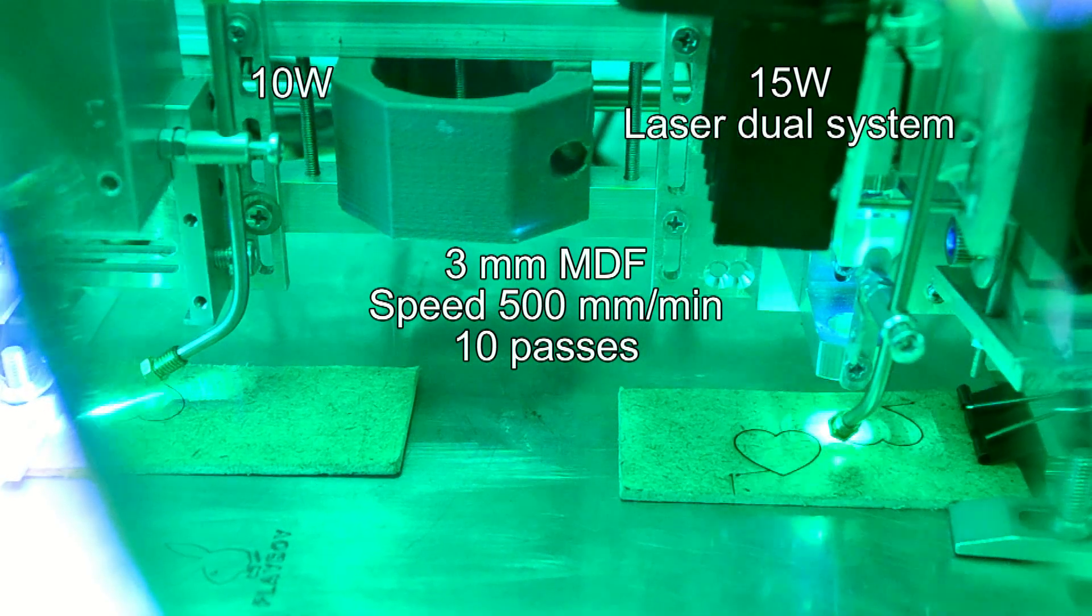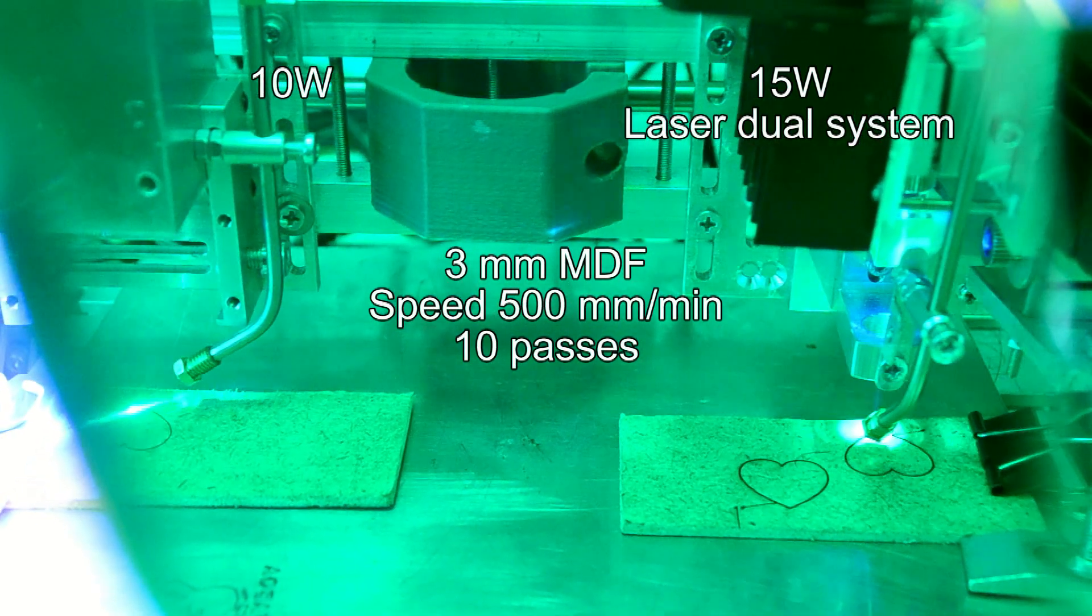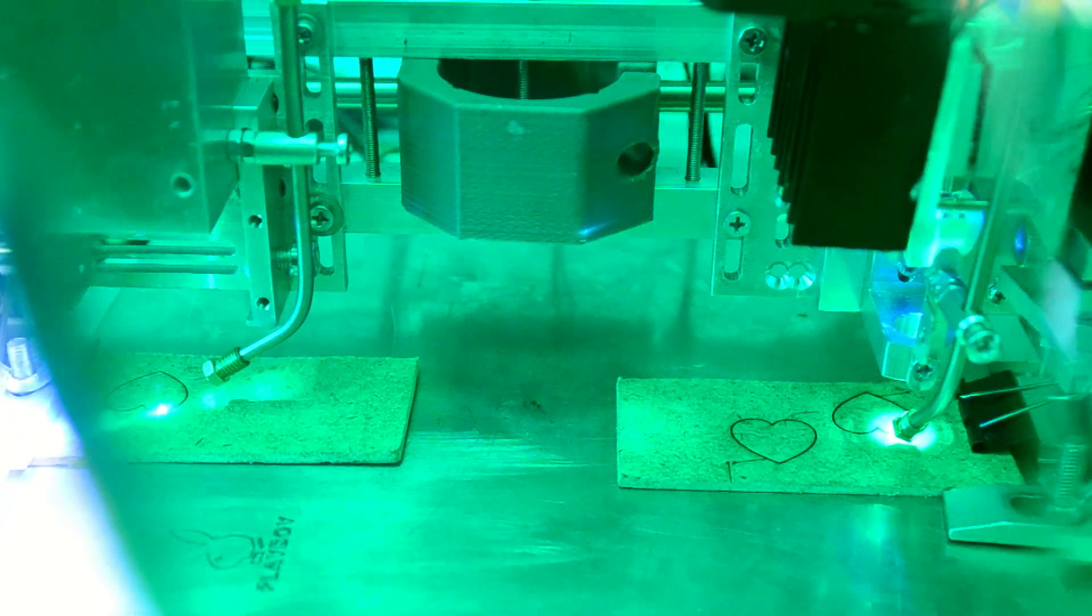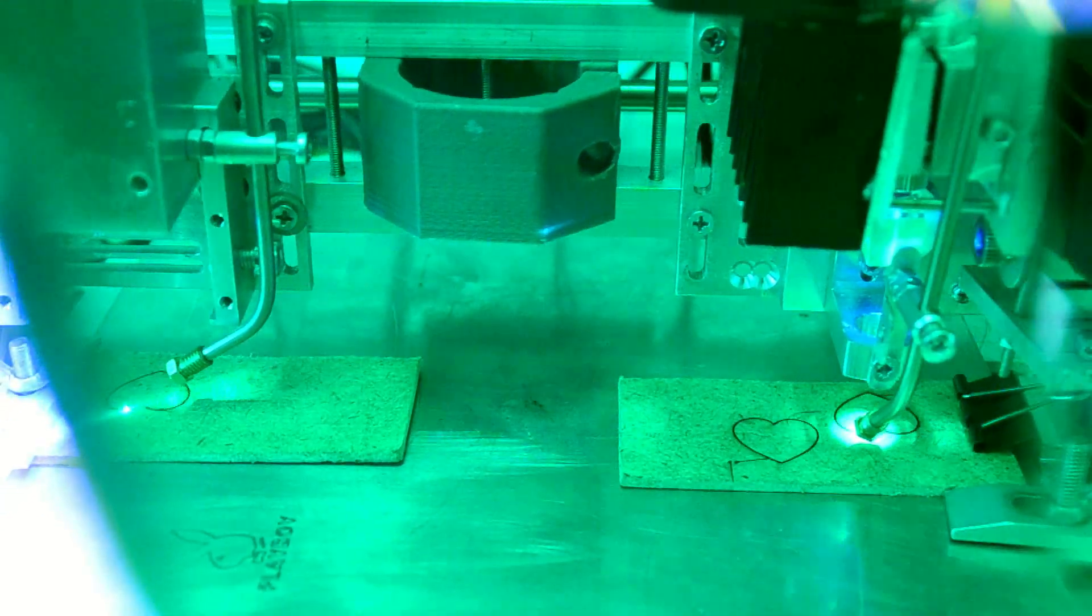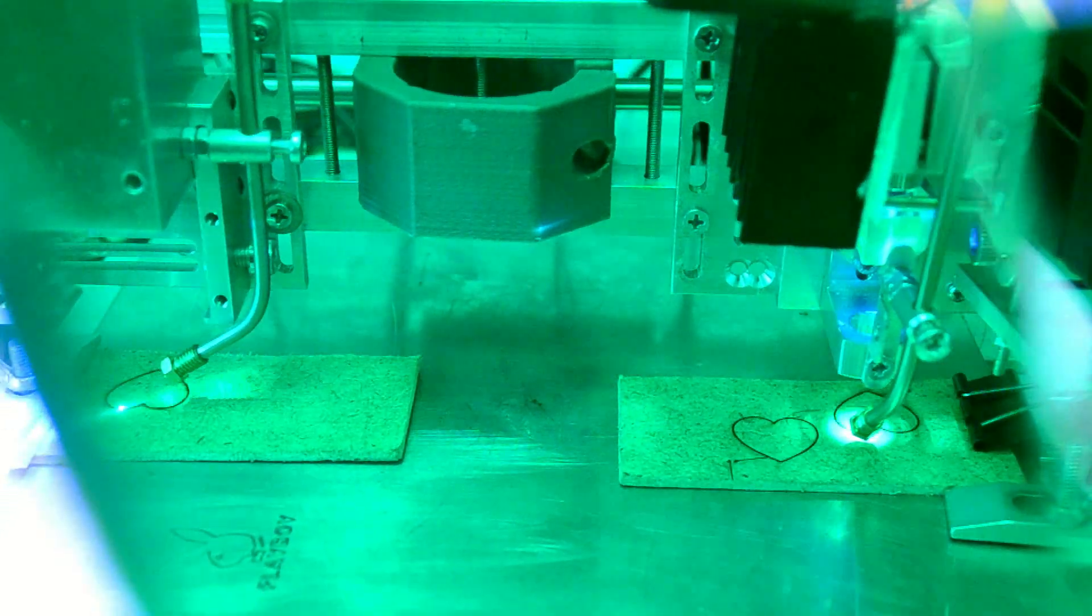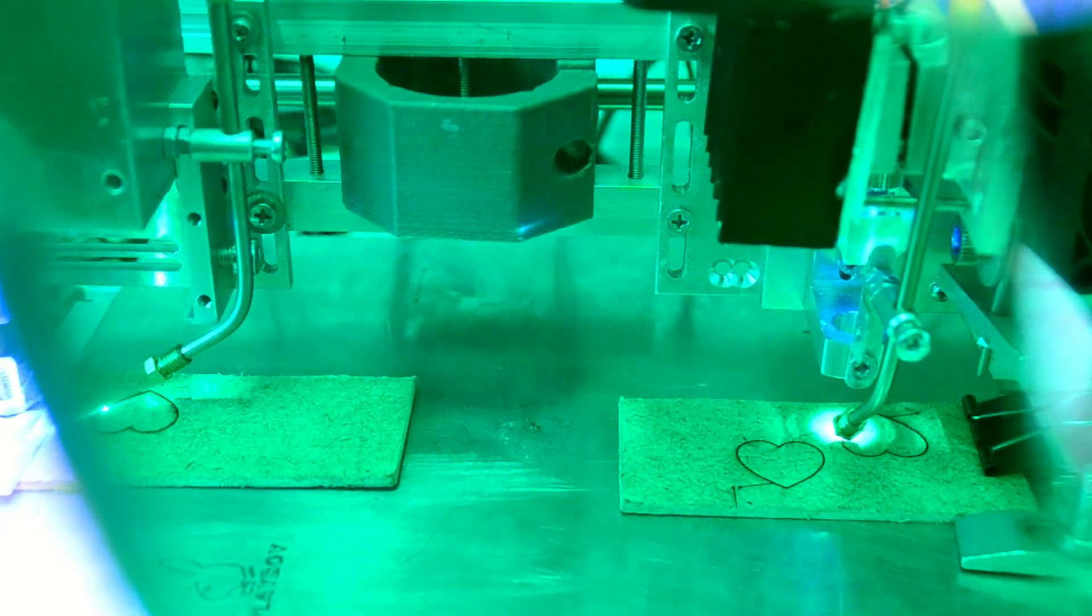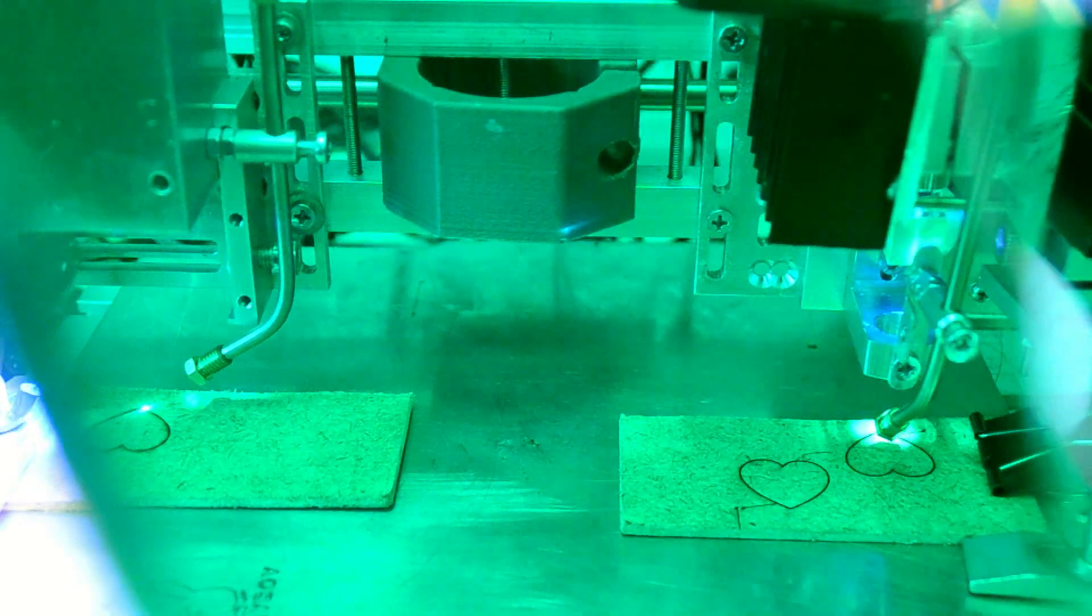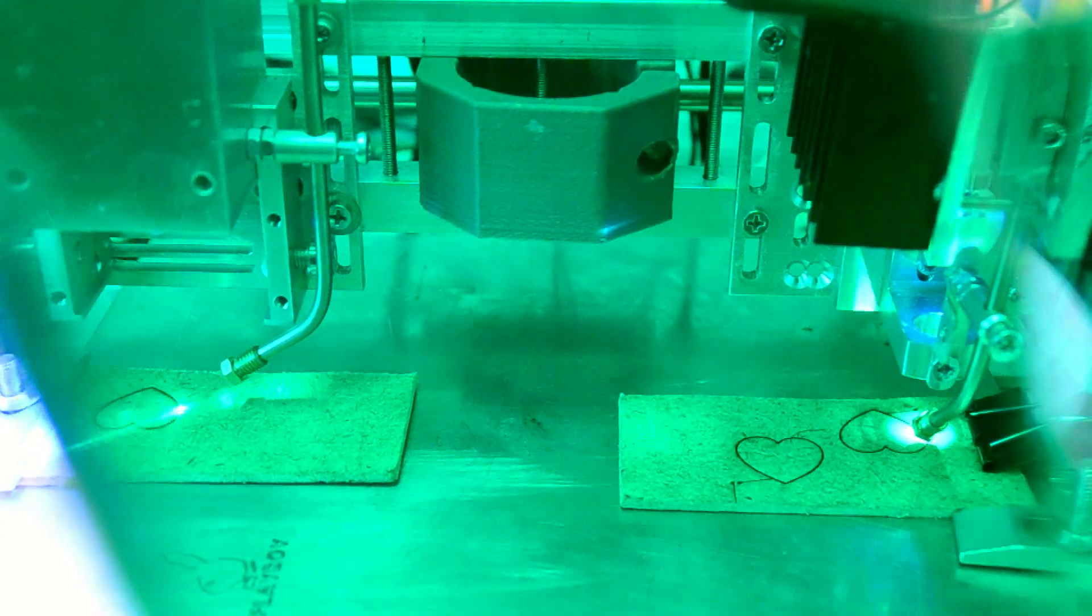We are going to cut different materials starting with 3mm MDF at a very fast speed of 500mm per minute, and we do it with 10 passes. This material is very firm and cannot be easily cut.